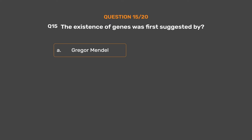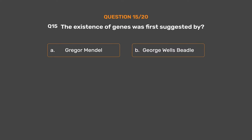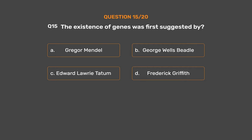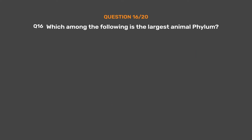Question number fifteen. The existence of genes was first suggested by: Option A: Gregor Mendel. Option B: George Welspiedel. Option C: Edward Laurie Tatum. Option D: Frederick Griffith. The correct answer is Option A: Gregor Mendel.